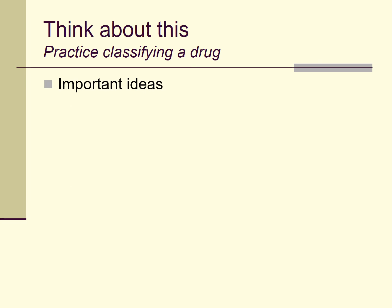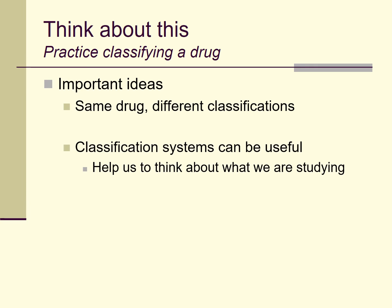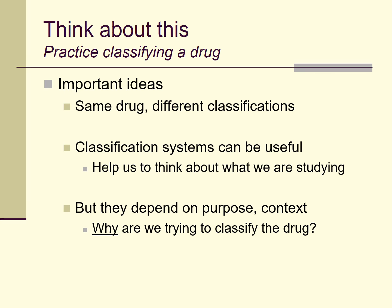So a couple of important ideas here. First, the same drug can have different classifications depending on the perspective we take. Classification systems are useful in that they help us think about what we're studying, and it may be valuable to group a new drug with others to help us study or regulate it — but it depends a lot on why we're trying to classify the drug. For a police officer, calling it simply an illegal drug may be sufficient. For a pharmacologist exploring chemical structure, grouping it with chemically similar drugs is more useful.